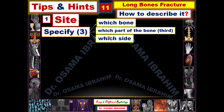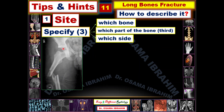The third item to specify is whether it is the left or right side. For example, this is a fracture of the femur. If you wanted to describe this femur fracture according to the site, the site is the proximal third. So this is a fracture at the proximal one-third of the right femur, because 'R' here refers to the right side. We are specifying the right side, specifying the bone as femur, and specifying the part of the bone that is fractured — the proximal part.